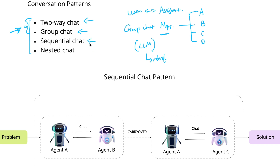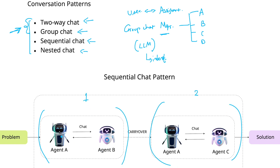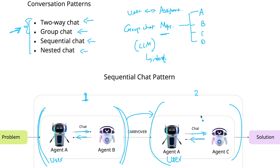In this session we are briefly going to cover sequential chat and nested chat. Sequential chat, as represented in this diagram, involves two sets of agents. Here agent A is chatting with agent B, and the same user agent again converses with agent C. Whatever conversation history we had in the first set of agents is carried over to the next set of agents in a sequential manner using the carryover mechanism.